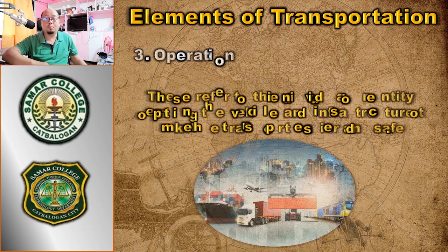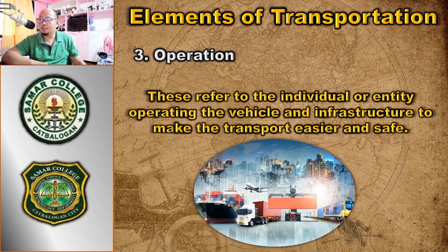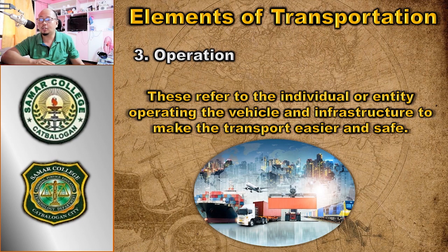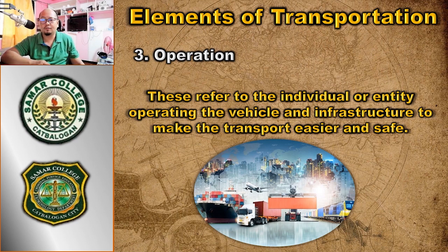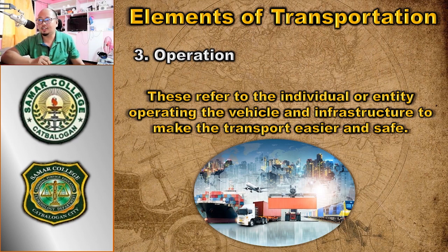The last element is operation. Operation refers to the individual or entity that operates the vehicle and infrastructure to make transport easier and safe. They build roads, bridges, traffic signs, and traffic signal lights to ensure orderly and safe movement of vehicles from one place to another.